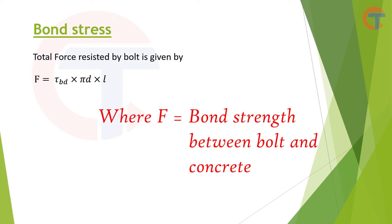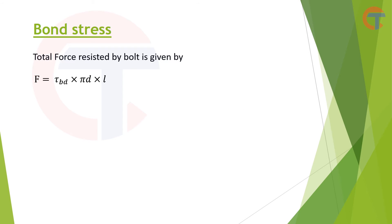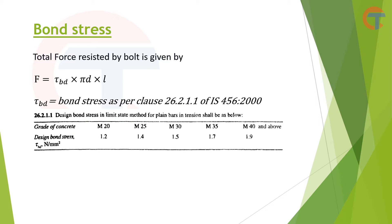We can use this formula to calculate the force that can be resisted by the bond strength: F = τ_BD × π × D × L. Here τ_BD is the bond stress as per clause 26.2.1.1 of IS456-2000. From the table, for M20 it is 1.2 N/mm², for M25 it is 1.4 N/mm², and for M40 and above you can take 1.9 N/mm².